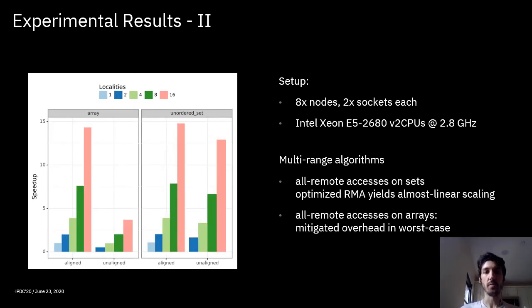The story is a bit more complicated for multi-range algorithms, but here I want at least to remark how our optimizations guarantee almost linear scaling even on the very worst case of all remote accesses for the unordered set, for associative containers, but also for the unaligned case, all remote accesses for contiguous containers like the array in this case. We still have some scaling even if of course we pay some latency due to the unavoidable remote accesses versus the all-local accesses.